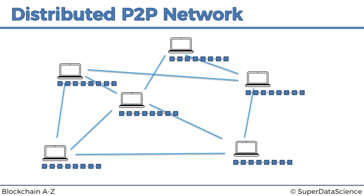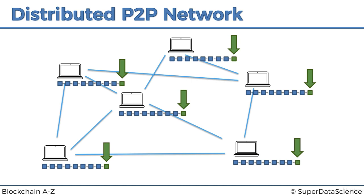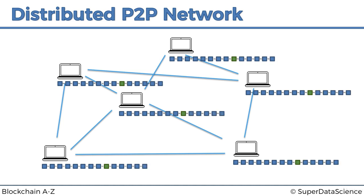Once a new block is added, that information is communicated throughout the network and that block is propagated further and further until all of the computers have it — which might take some time in large networks. In this case it's the house we purchased, and we can see it's now copied onto all the nodes. Then some time passes, more transactions are added in a similar manner, and now the problems come.